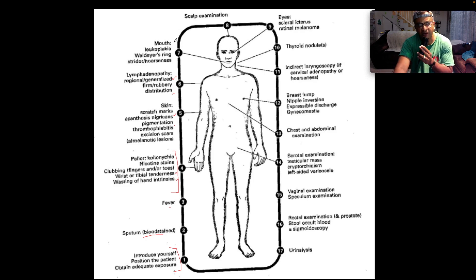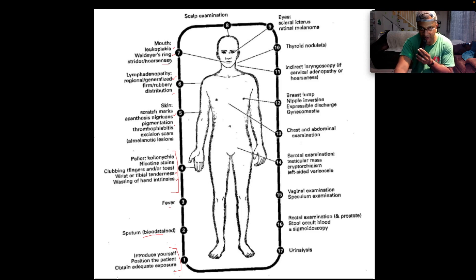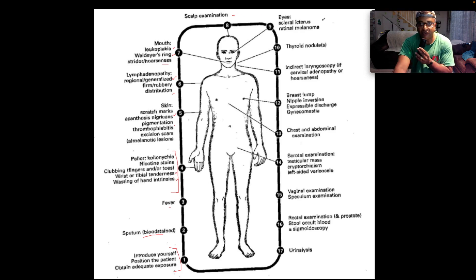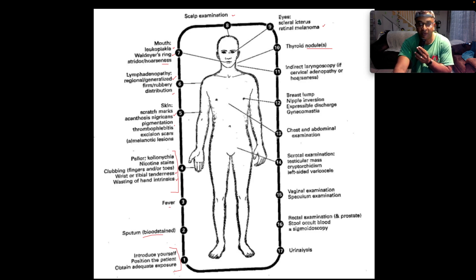Then look into the mouth for leukoplakia, walled-off areas speaking to enlarged tonsils, stridor, and hoarseness. If there's hoarseness of voice, you probably want to engage the ENT team to come and have a look at those vocal cords. Examine the scalp and then the eyes for scleral icterus and for what may be a retinal melanoma. Check for thyroid nodules, especially those setting off a goiter. In the neck, laryngoscopy is indicated, especially if there's cervical adenopathy or hoarseness.